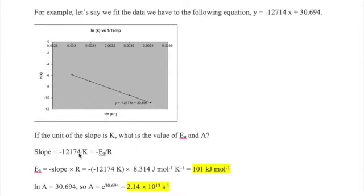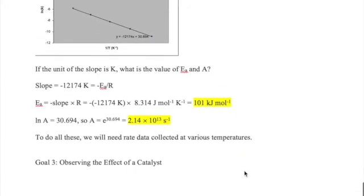The slope can be used to determine EA. Since slope is negative EA over R, then EA should equal negative slope times R. Plugging 8.314 joules per mole Kelvin for R, we should get EA equals 101 kilojoules per mole for this reaction.